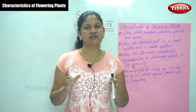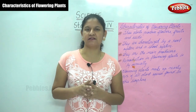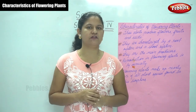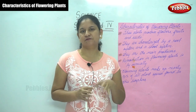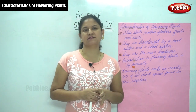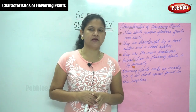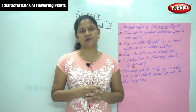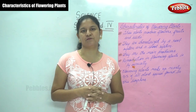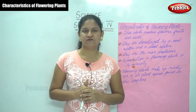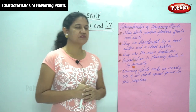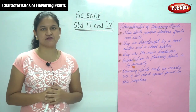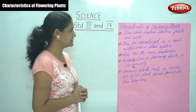There are two types of plants: flowering plants and non-flowering plants. Flowering plants are a type of plant that produces flowers, and non-flowering plants are a type of plant that do not produce flowers. Now we are going to move on to the characteristics of flowering plants.